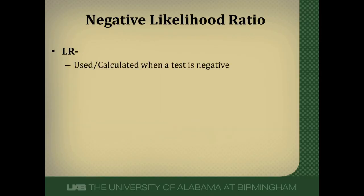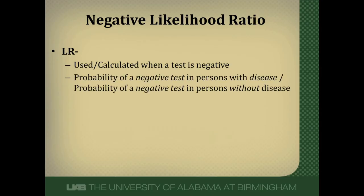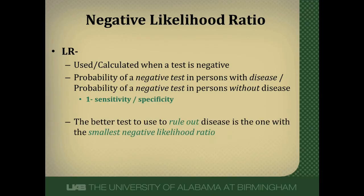A negative likelihood ratio is used when the test result is negative. It's the probability of a negative test in persons with disease divided by the probability of a negative test in persons without disease — that denominator is specificity, and the numerator is one minus sensitivity. If we want to rule out disease and reduce our probability as much as possible, we want to pick the test that has the smallest negative likelihood ratio, as that will reduce our post-test probability the most.